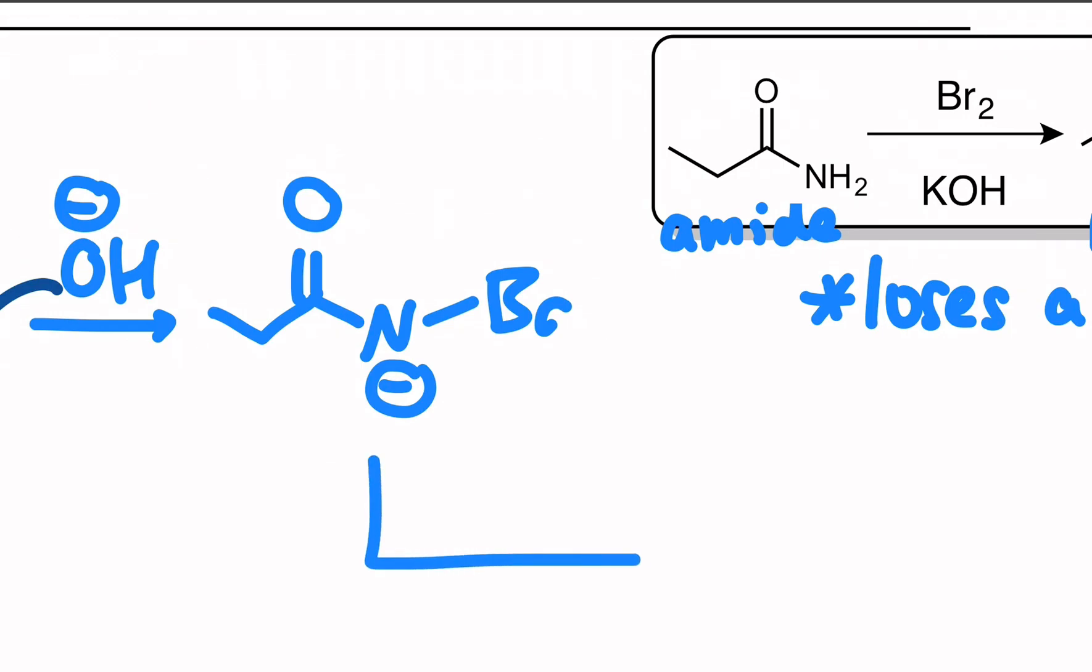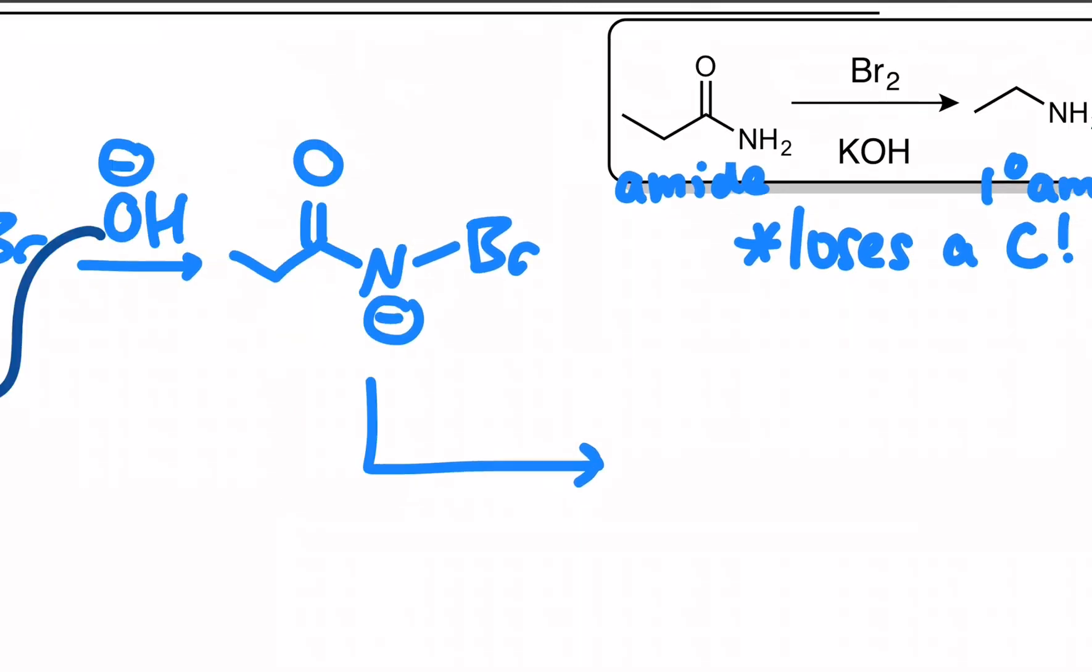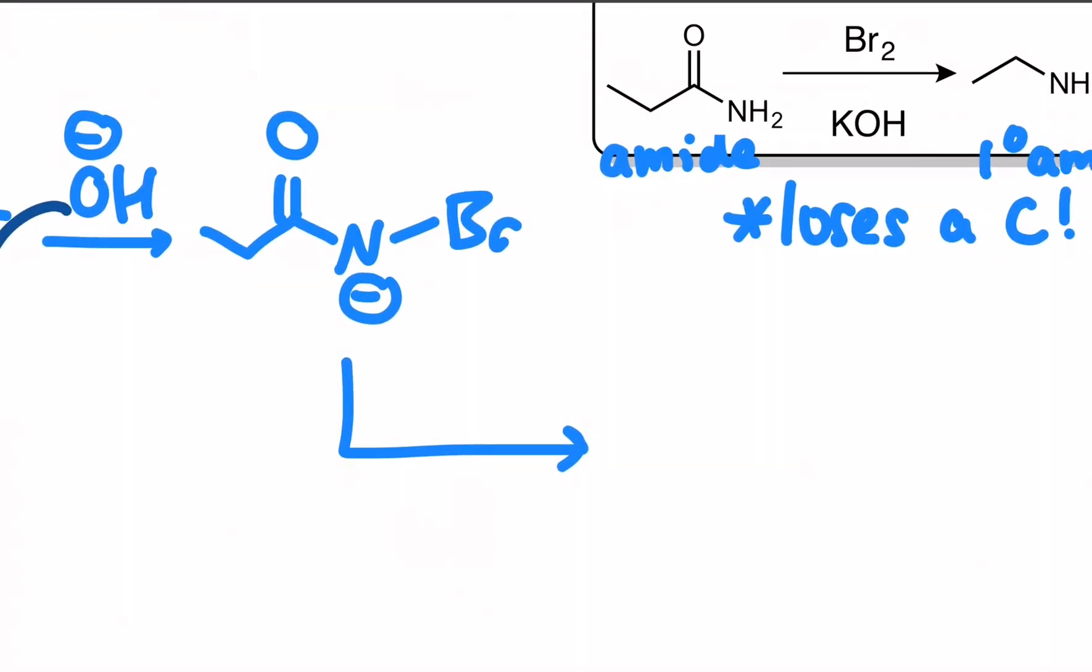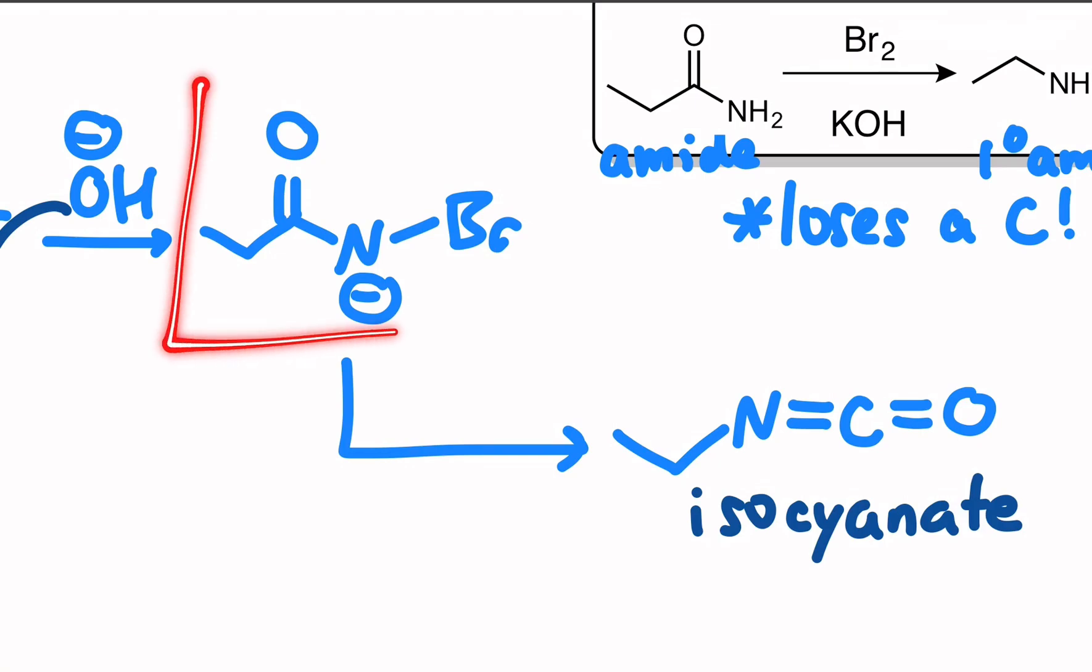Once you get to this intermediate, it collapses to give you a very special intermediate called isocyanate. Which is a nitrogen doubly bonded to a carbon, doubly bonded to an oxygen. This is called an isocyanate. And the theme of practicing our curved arrows, I want you to hit pause again and see if you can figure out what curved arrows you draw on top of this intermediate to get to this isocyanate. It's very bizarre looking. Clearly I'll give you one hint - the bromide leaves. You have a bromine leaving, and then the rest of the electrons are in what's left behind.